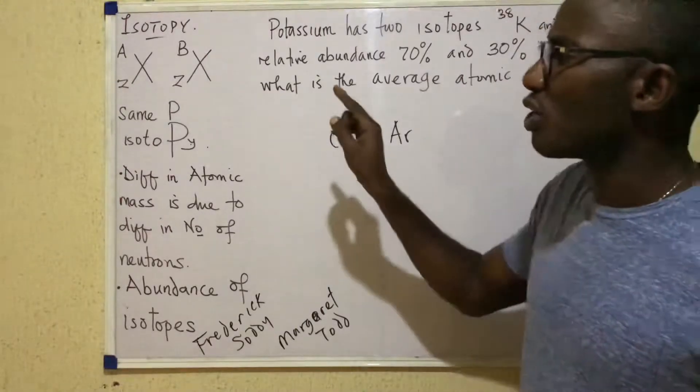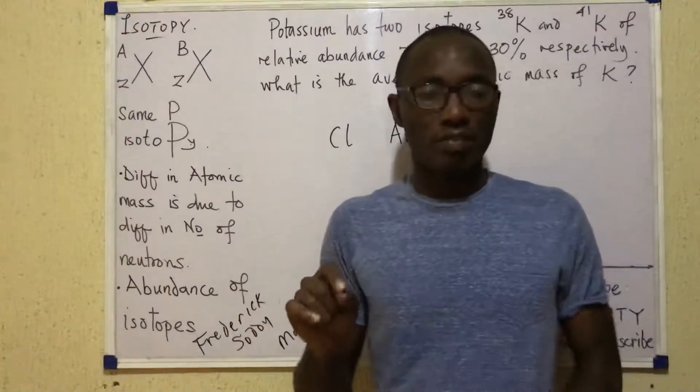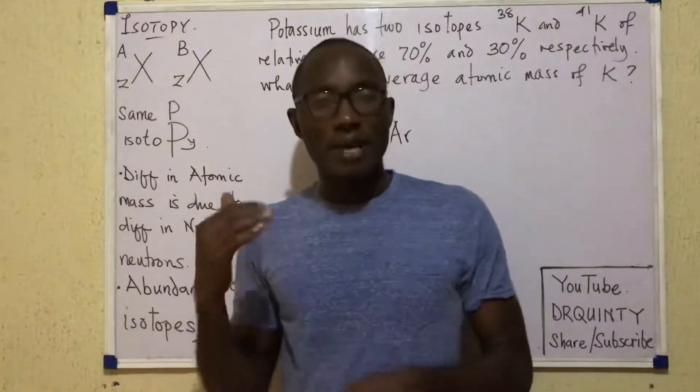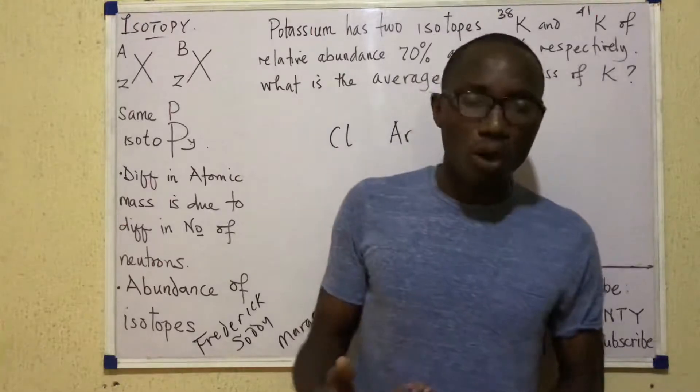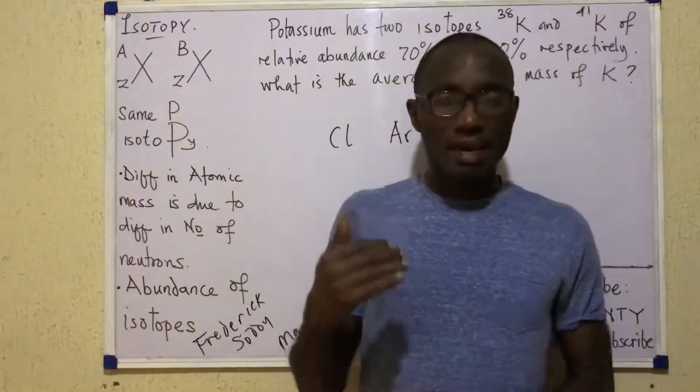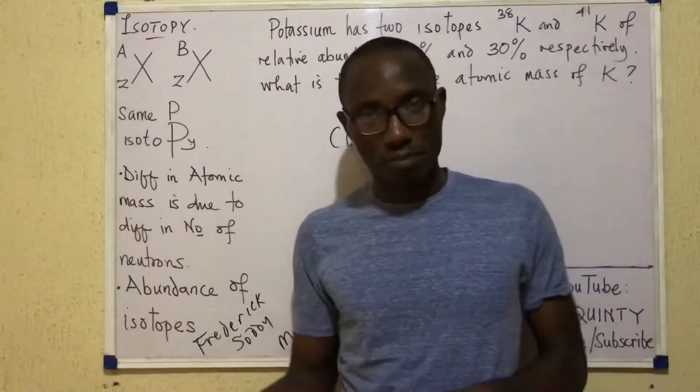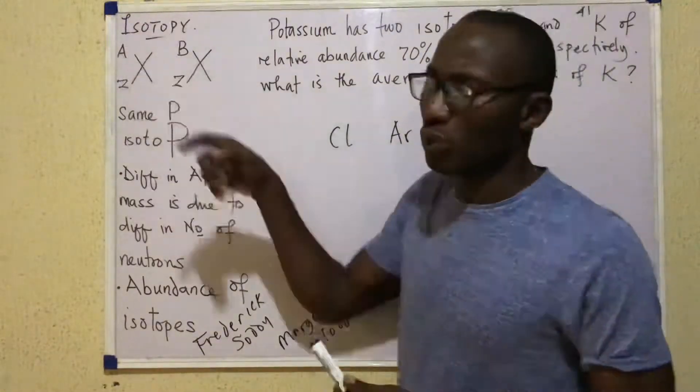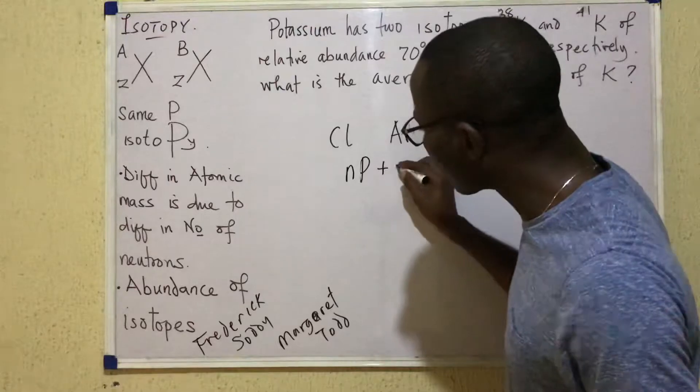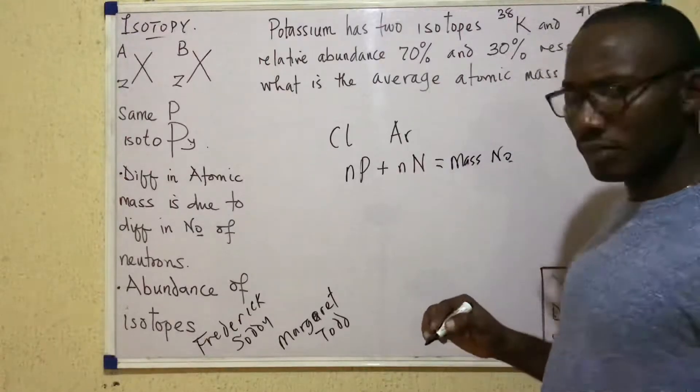But you remember that atomic number itself is the number of protons within the nucleus of an atom. So if you say that two atoms have the same atomic number, that would in effect mean that they contain the same number of protons. But the number up here, which we call mass number, means number of protons plus number of neutrons. So this will give us mass number.